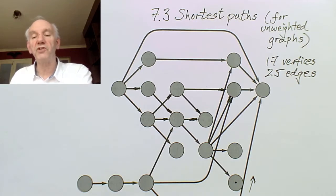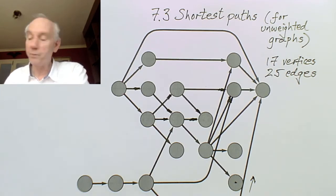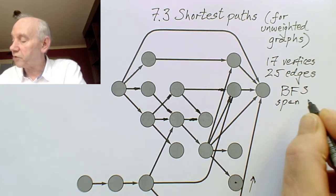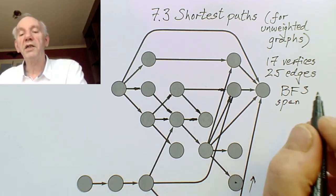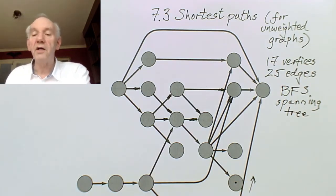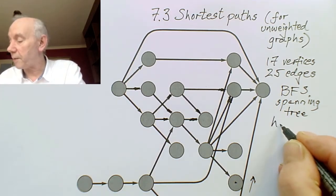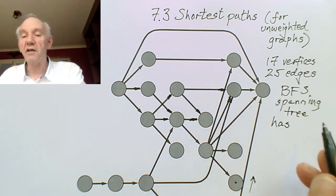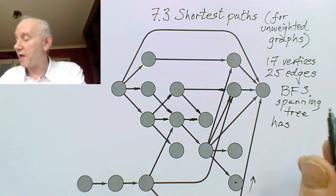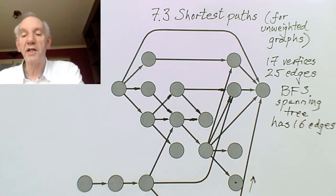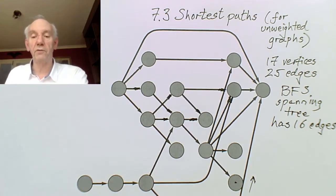What we're going to do is just do a breadth first search, and in tracing our steps in that we're going to construct the BFS tree — the BFS spanning tree. Spanning means that it gets to all the vertices. The tree in this context is a subgraph that includes all the vertices, so it's a spanning tree. And because it's a tree — that means a connected graph without cycles — since there are 17 vertices, any tree has one edge less, so it has 16 edges. So essentially we're going to have to discard 9 edges from the graph to get the tree and avoid any cycles.